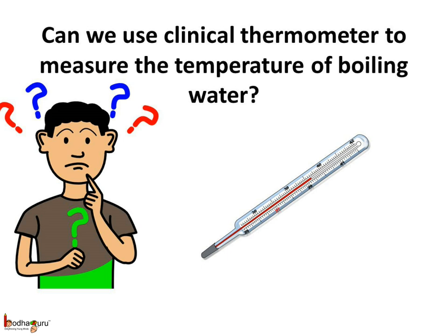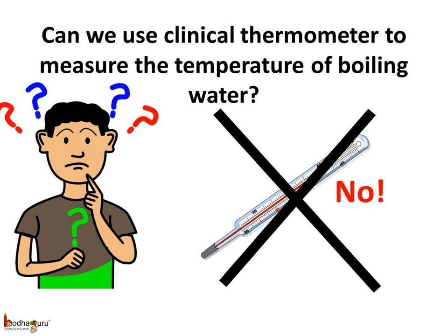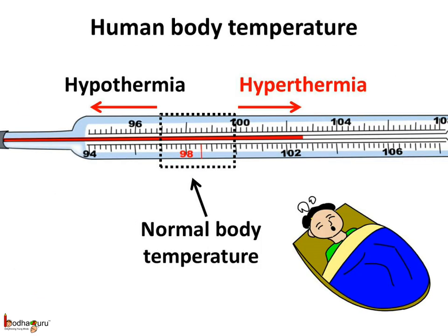Can we use the clinical thermometer to measure the temperature of boiling water? No, the clinical thermometer is only suitable to measure our body temperature. The temperature of a living person cannot be less than 94 degree Fahrenheit. When the body temperature is less than normal, it is called hypothermia. And when the body temperature is above the normal range, we call it fever. Increase in body temperature is called hyperthermia. The chances of survival of a person are very less if the body temperature crosses 107 degree Fahrenheit. So the clinical thermometer has a scale from 94 degree Fahrenheit to 108 degree Fahrenheit.